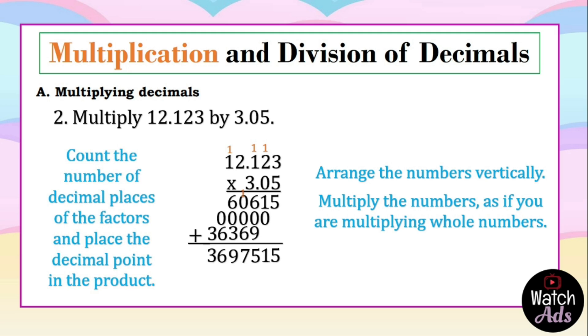Next, we count the number of decimal places. For our first factor, we have 3 decimal places. For our second factor, we have 2 decimal places, which gives us a total of 5 decimal places. We put 5 numbers to the right of the decimal point, placing the decimal point between 6 and 9. Our final answer is 36.97515 hundred thousandths.